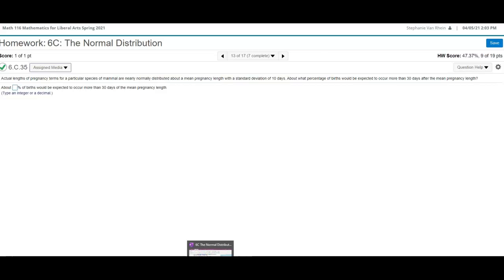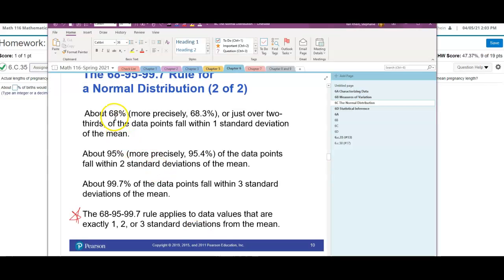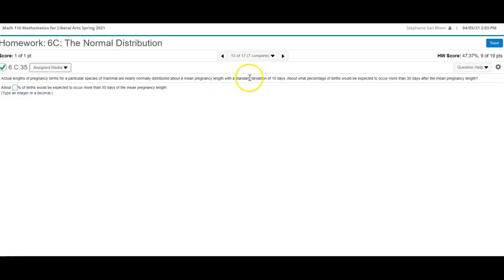On this example, they're wanting you to use the 68%, 95%, and 99.7% of the 1, 2, and 3 standard deviations from the mean rule. And the one that pops up here, we are looking at a normally distributed pregnancy with a standard deviation of 10 days. What percentages of birth would be expected to occur more than 30 days after the mean pregnancy length?